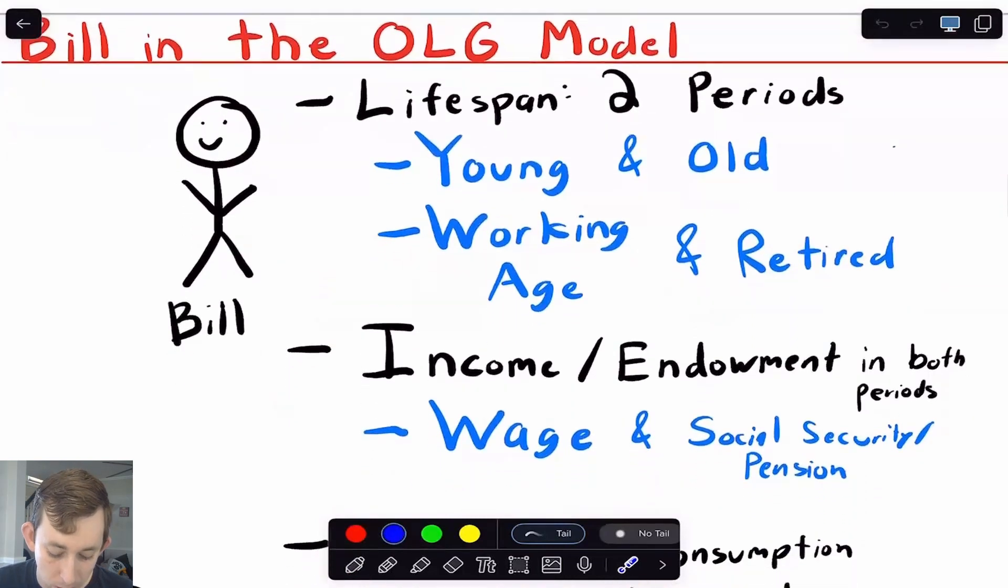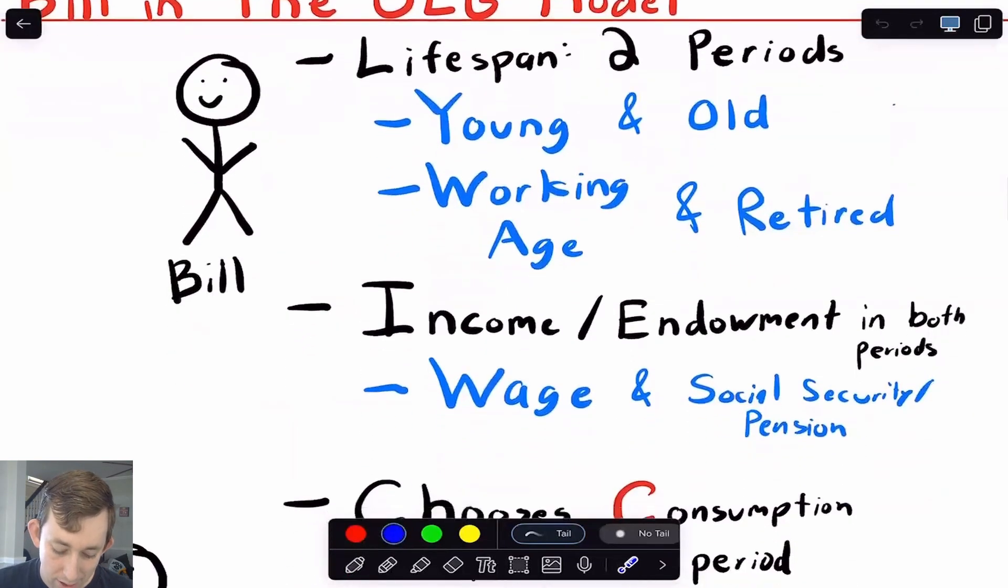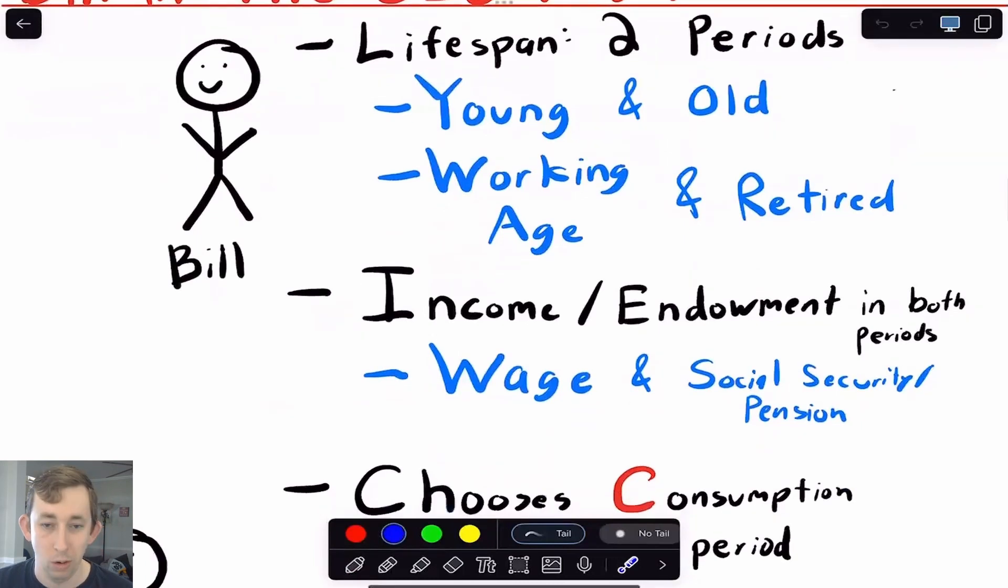So again, if you're thinking young and old, or working age and retired, maybe when he's young, he gets a wage, and maybe when he's retired, he gets a pension or social security. Now that's not to say that in this current version of the model, we're going to have Bill choose how much to work, we're just going to assume he works, we're going to assume he gets an income some way, somehow. And I think just saying that it falls from the sky in every period starts to get a little old. So if that's not as helpful, again, you can think about Bill getting a wage in his young days, and a social security or pension in his old days.